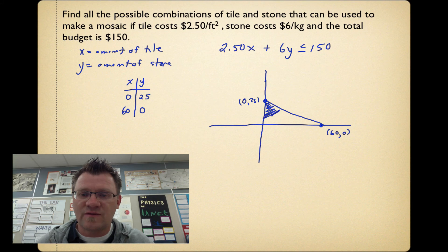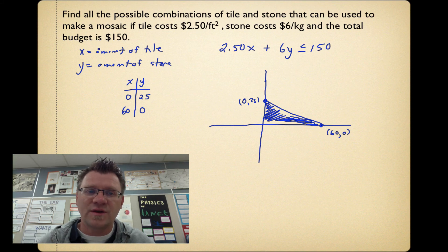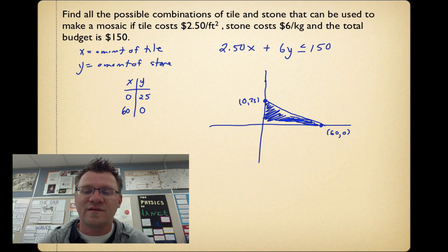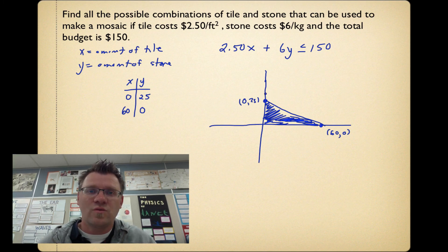So we're really just shading in this area right here. Because it's a real-life situation, we can't have tile amounts that are less than 0 or the amount of stone which is going to be less than 0, so I'm also just staying within the first quadrant. This is the region where any of your answers, any combination of x's and y's, would be less than or equal to 150.